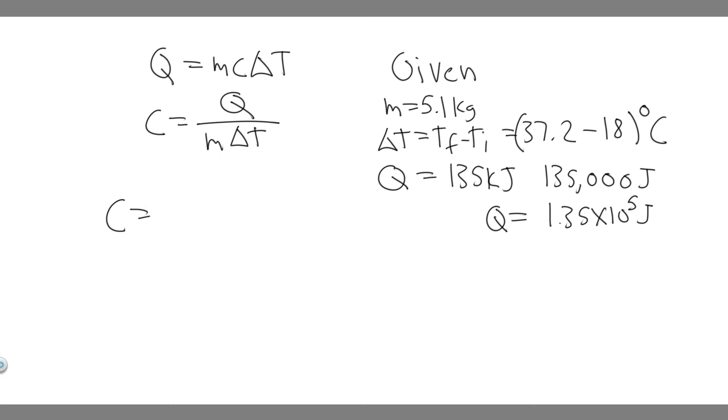You're going to get C equals Q, and so Q is 1.35 times 10 to the 5. I'm not going to put the units on, you can do that if you want. Then divided by the mass, which is 5.1, and then the change in temperature, which is 37.2 minus 18. This right here is what we need to plug into our calculator.